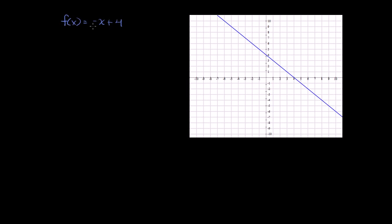We have f of x is equal to negative x plus 4, and it's graphed right here on our coordinate plane. Let's try to figure out what the inverse of f is. To figure out the inverse, I set the variable y equal to f of x. So we could write that y is equal to negative x plus 4.